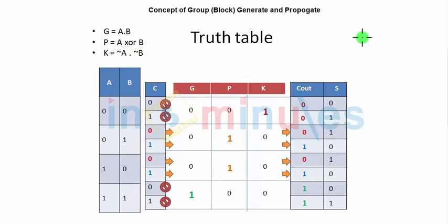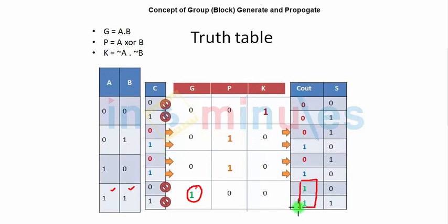We clearly saw that when inputs A and B are both high, Cout is generated — the generate signal G is 1 and Cout is produced irrespective of Cin. This means we can predict Cout without waiting for Cin. For one bit, generate G equals A AND B.